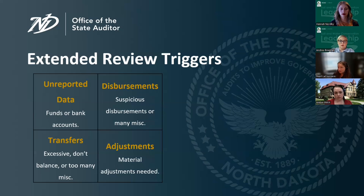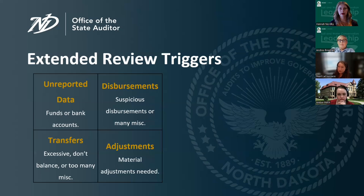Another trigger for an extended review is if a material adjustment of over 10% of total receipts is needed. This is likely an indicator that something is missing — perhaps funds that weren't included or transactions that weren't recorded.